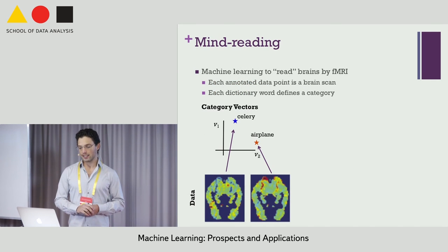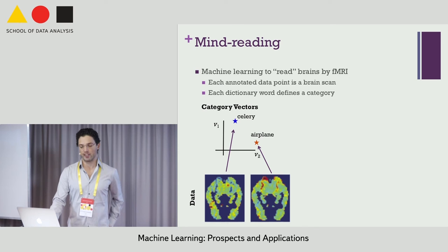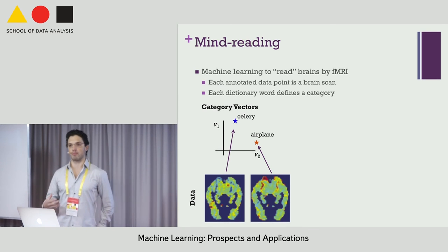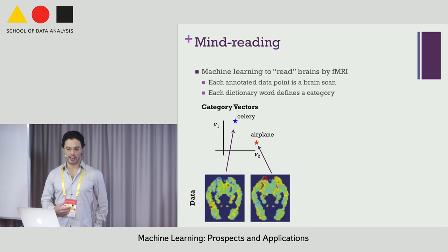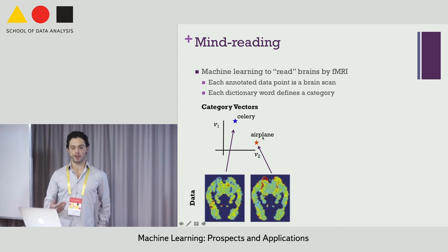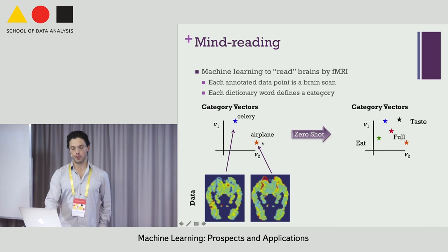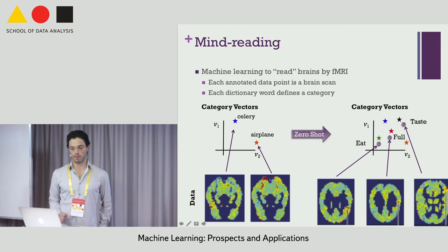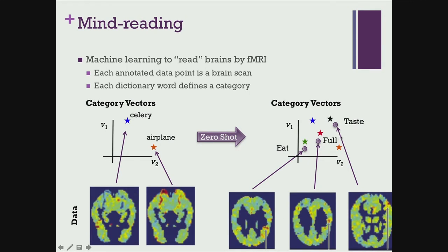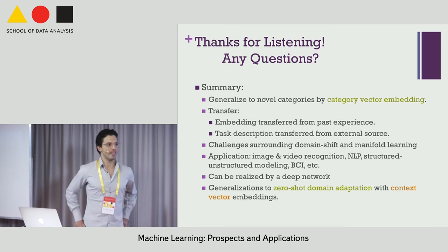The initial example that motivated the entire field of zero-shot learning is fMRI mind reading. You scan people's brains — and potentially use EEG as well — where each data point is a brain scan structure and you have a category vector for every word the person might be expressing. By training the appropriate regressions and applying them to new words, you can input new brain scans and generalize the ability to read a wide variety of words from people's minds.